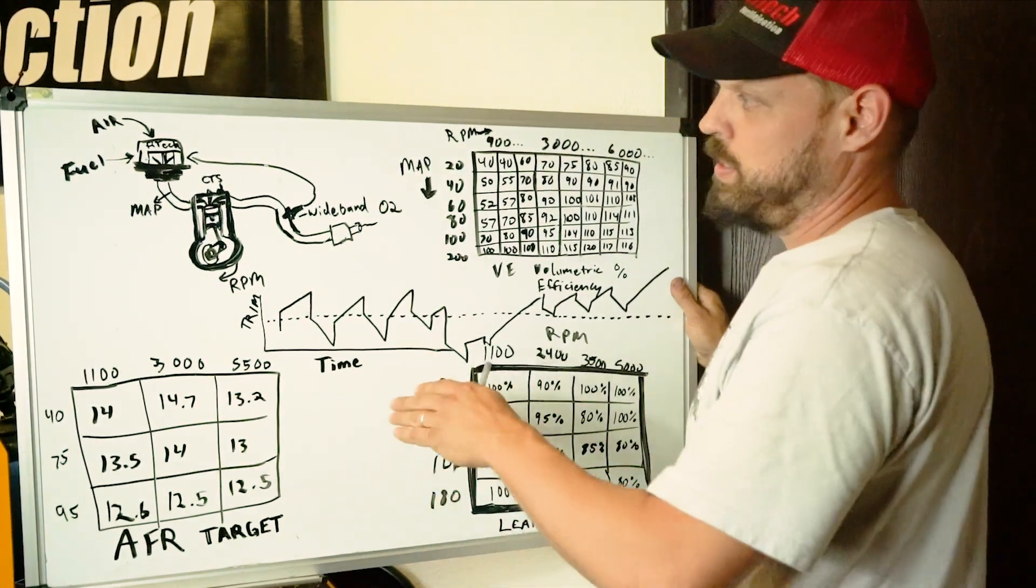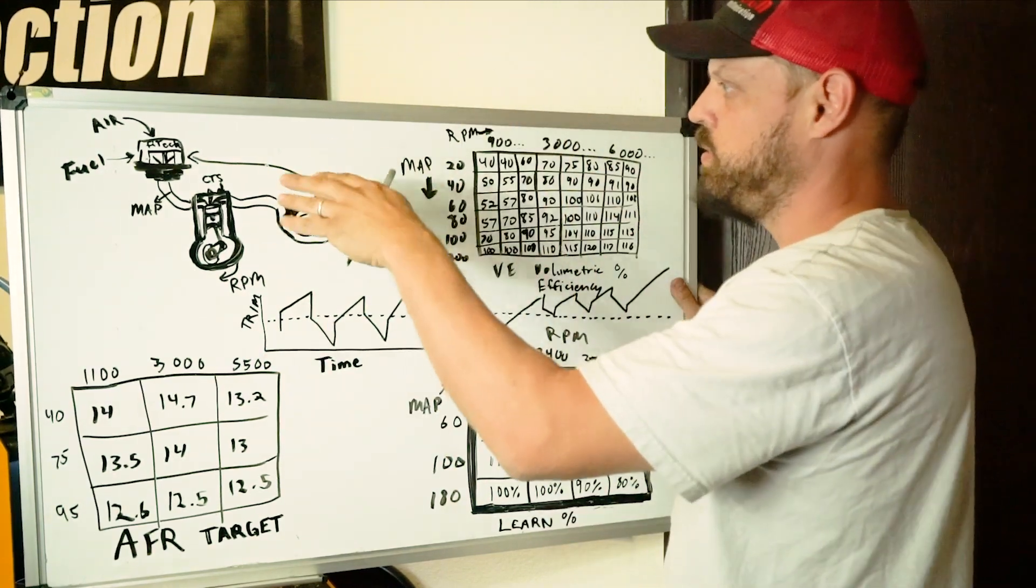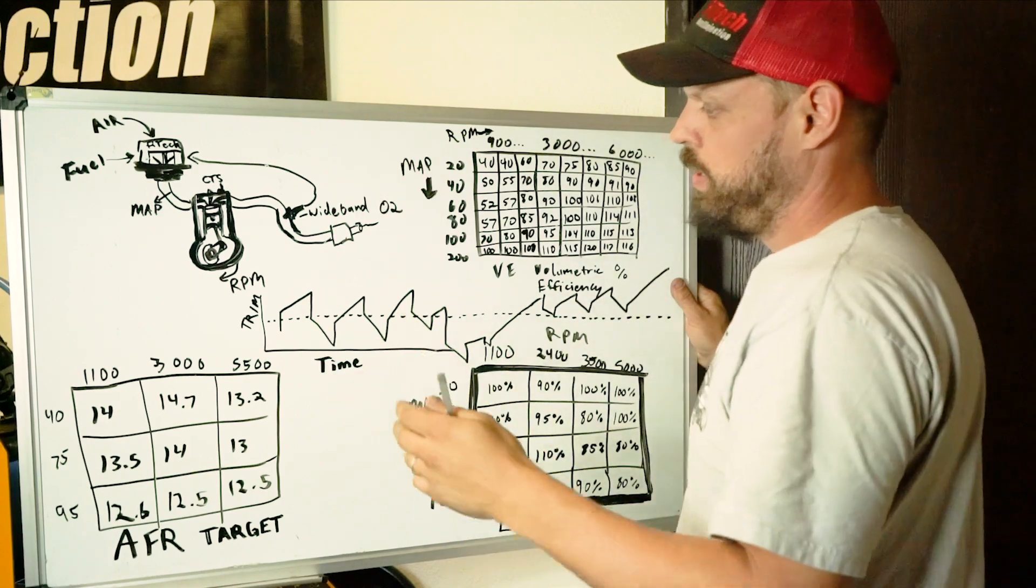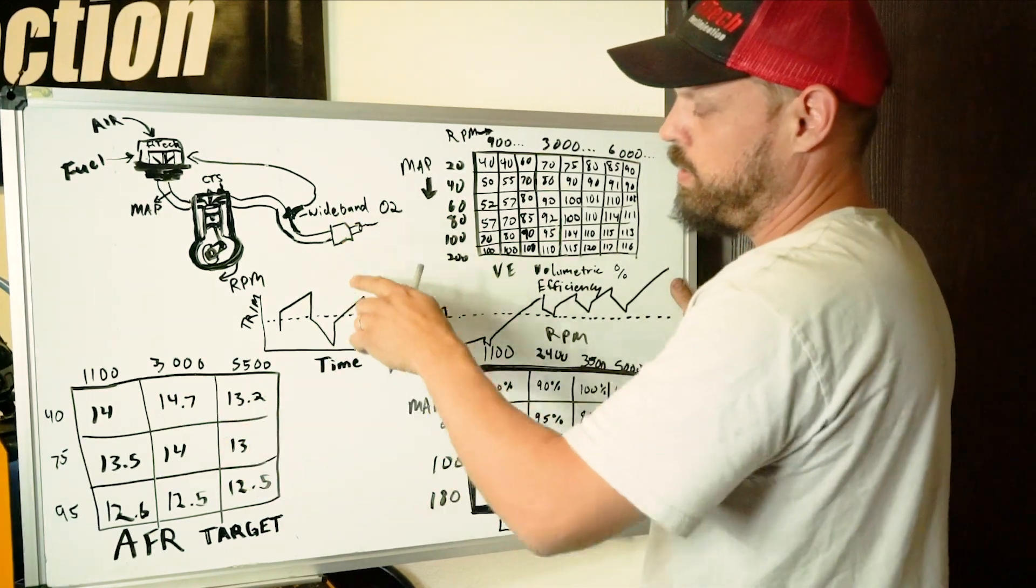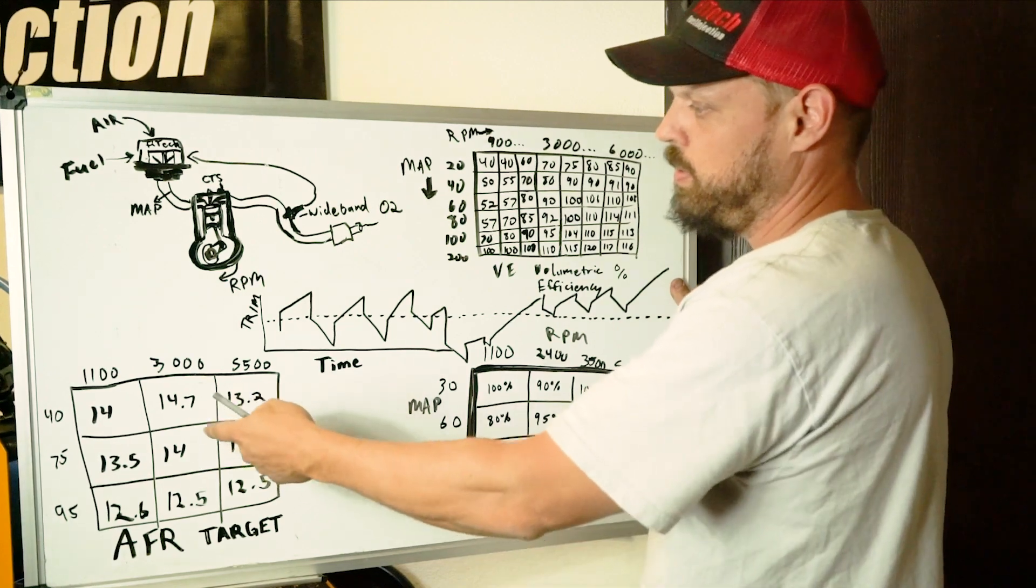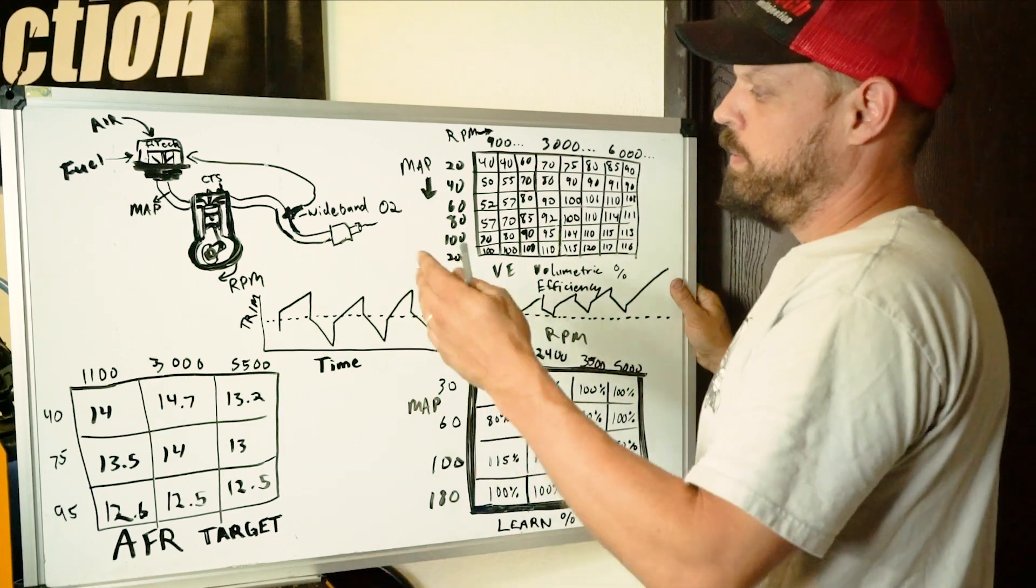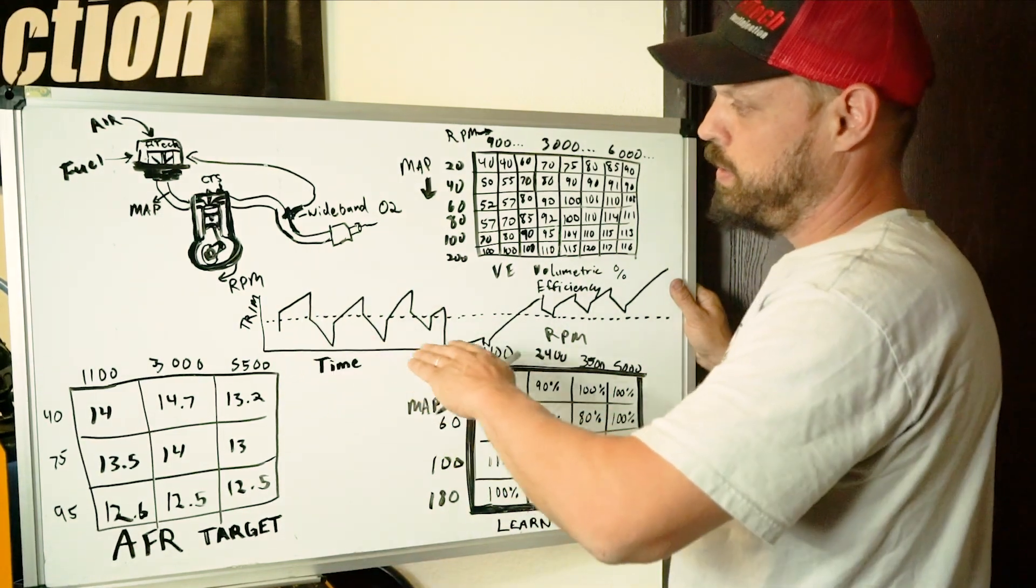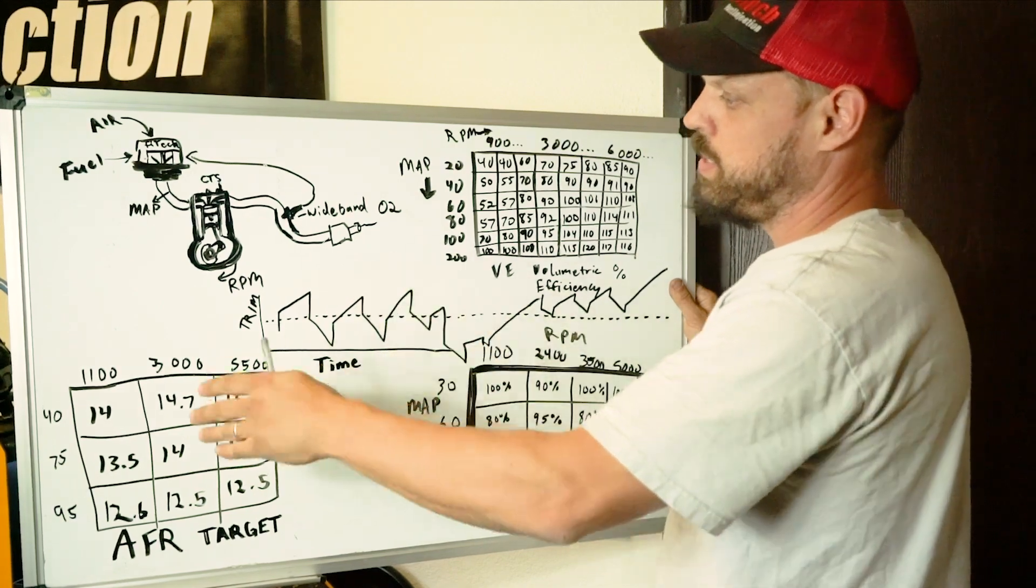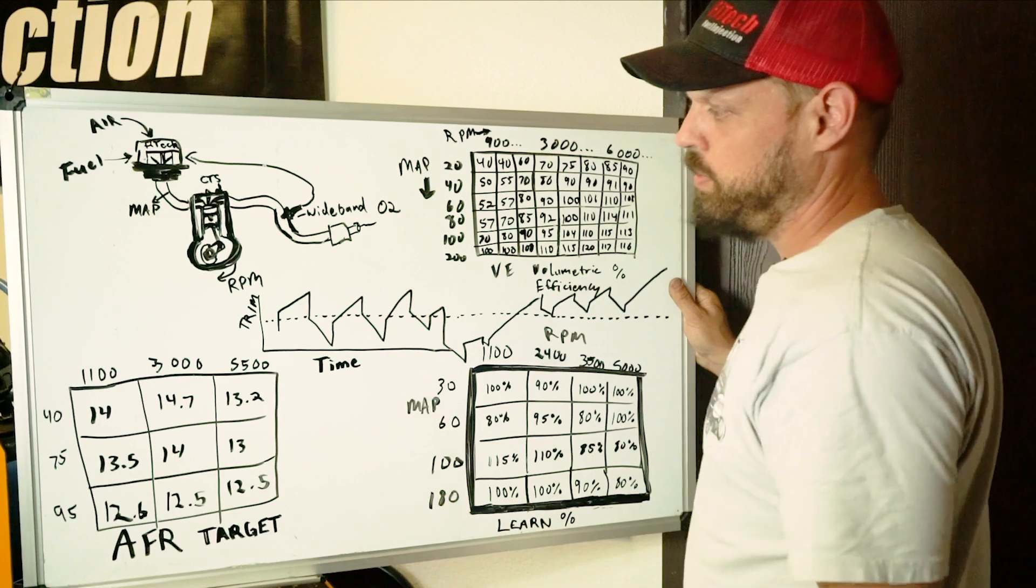I can say this pulse width needs to be so long in order to make that true. But there's going to be tolerances in the VE tables, in the sensors, in the engine itself that's going to make it so that it's not coming out exactly like that to the wideband sensor. Maybe in the middle it's going to read 13 to 1. So what do I need to do? I need to shorten the pulse width.